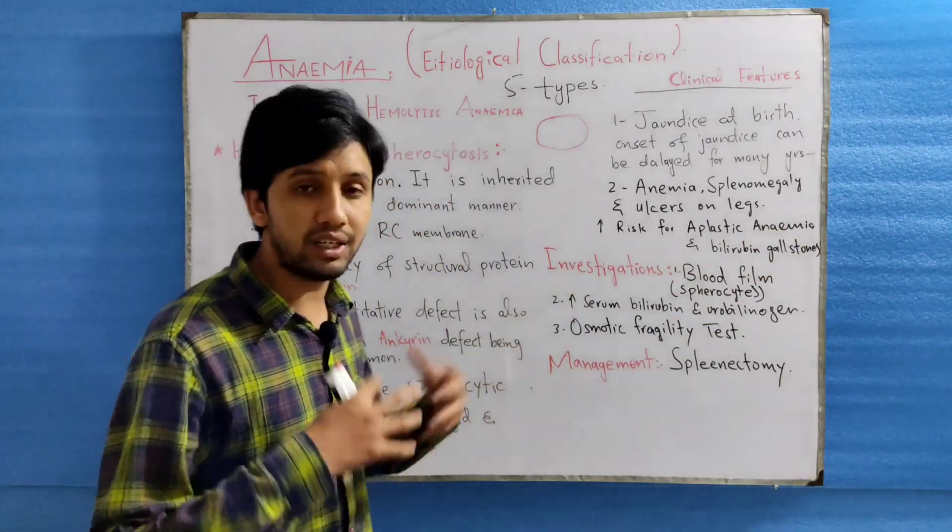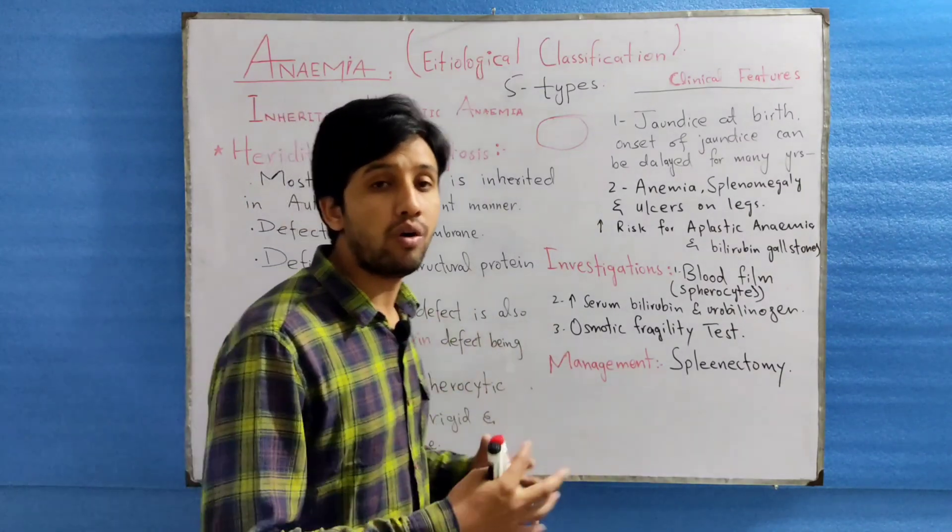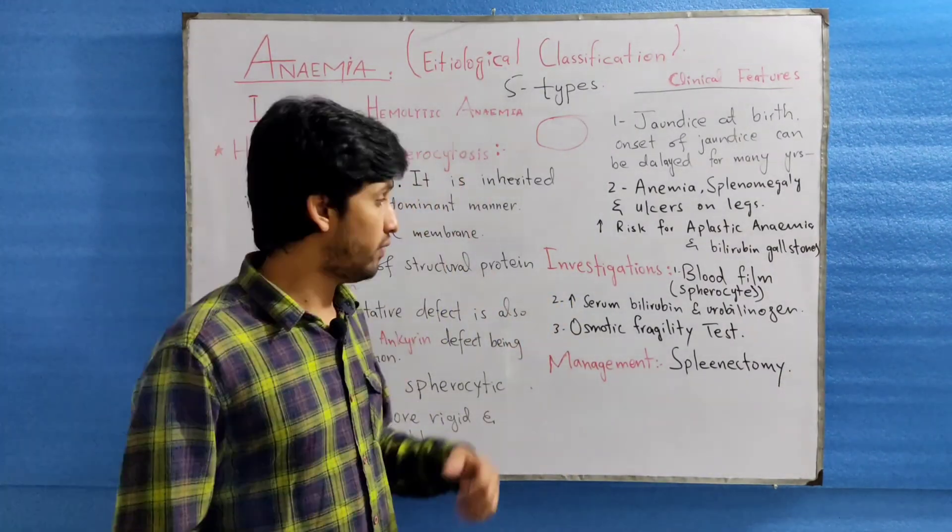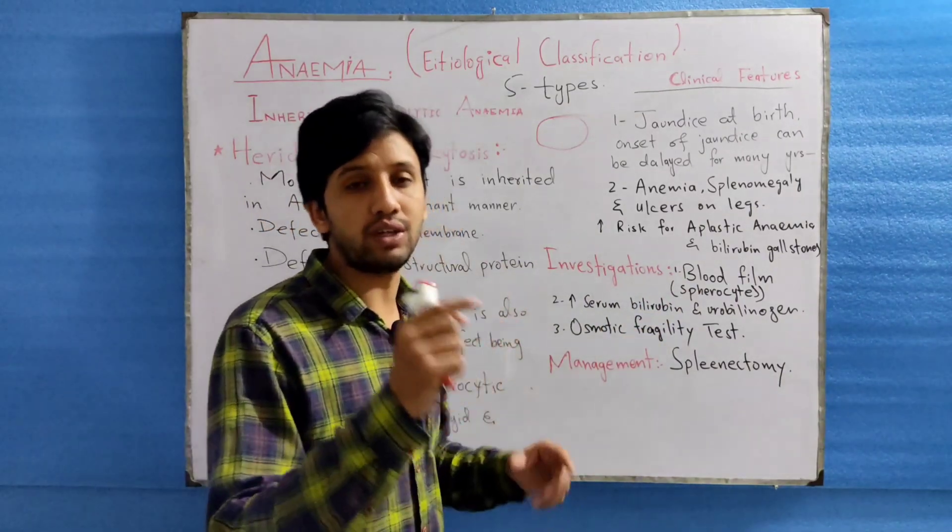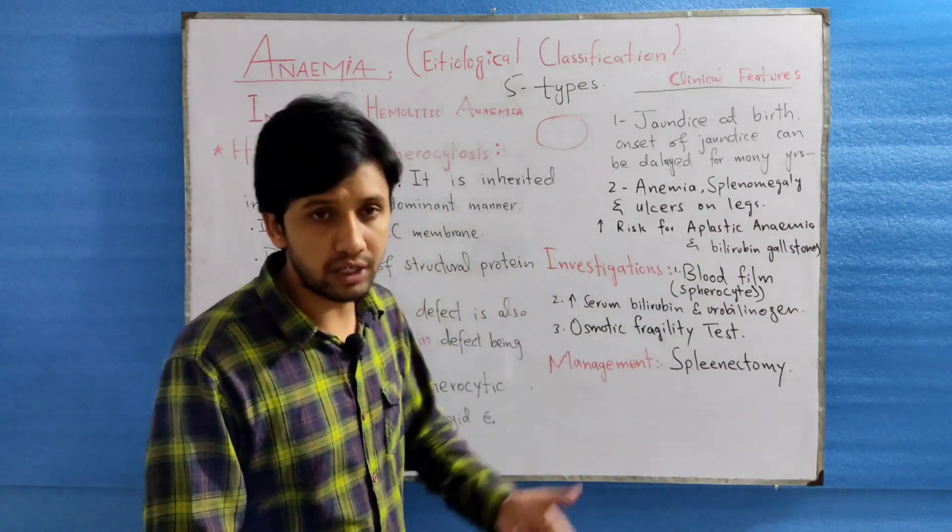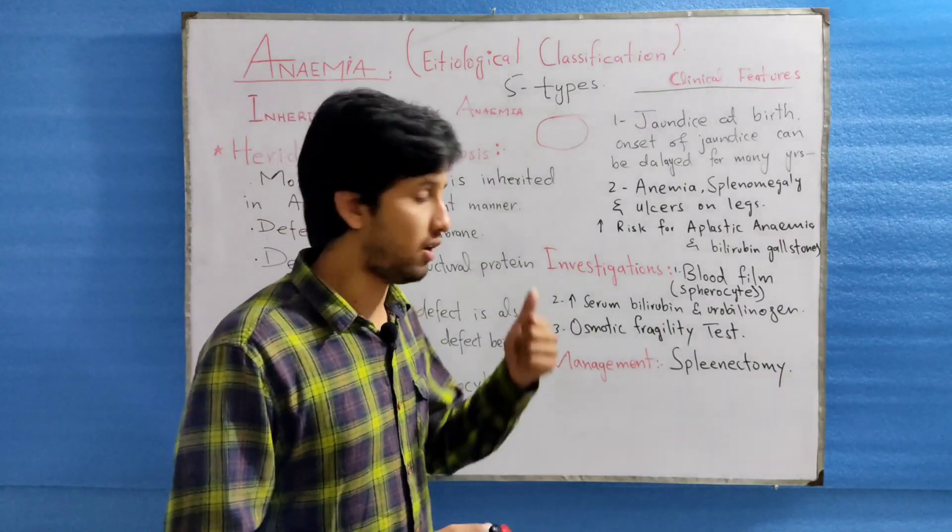Moving next, what are the different investigations we will do for this patient of hereditary spherocytosis? When we see blood film, the blood film will show the spherocytic nature of the RBCs and some reticulocytes will also be present.